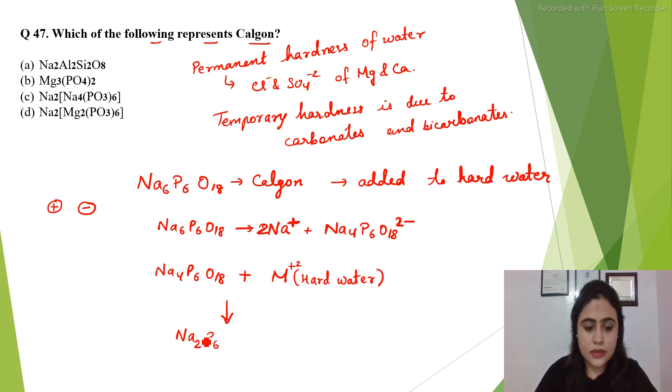MP6O18^2- plus 2Na+ again. When plus 2 gets eliminated, there is again minus 2 charge getting eliminated.